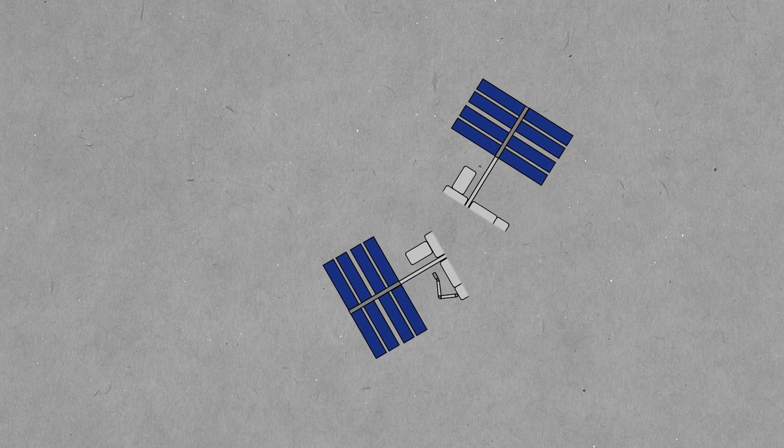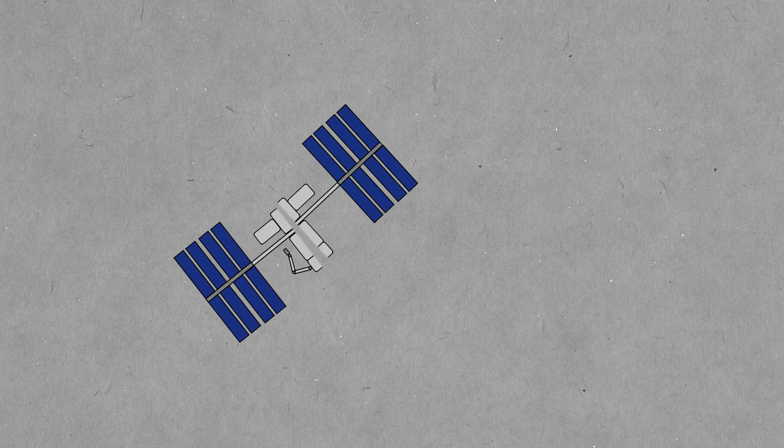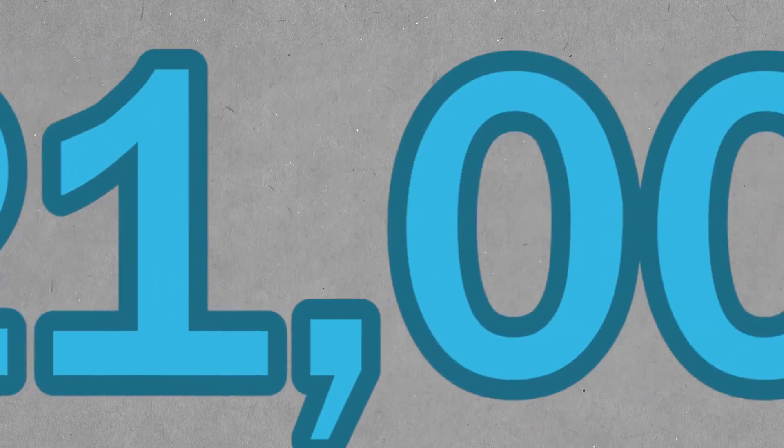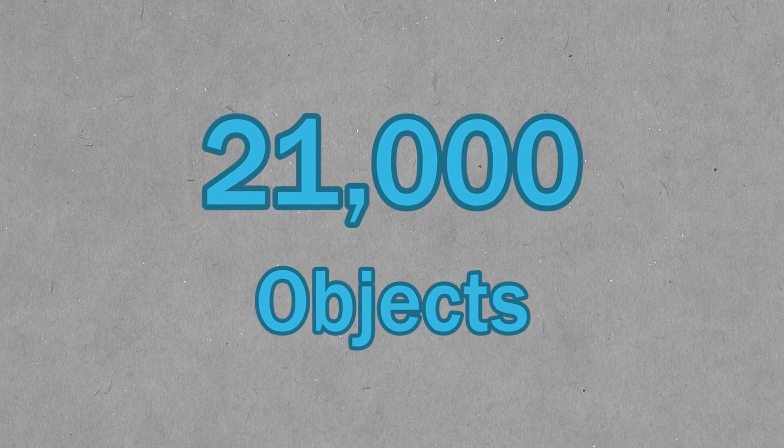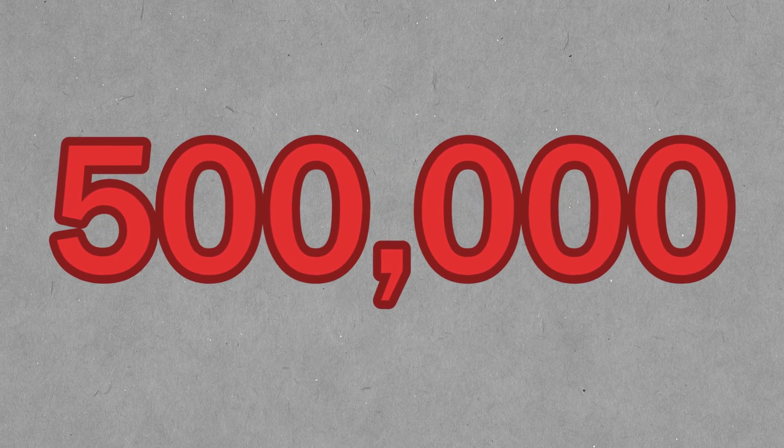Now, this wouldn't necessarily happen to the ISS, because it's being maneuvered constantly to avoid collisions, but there are still 21,000 other objects that are being tracked by NASA, and those are only the ones that are larger than 10 centimeters. There's an estimated 500,000 pieces of debris that are smaller than that.